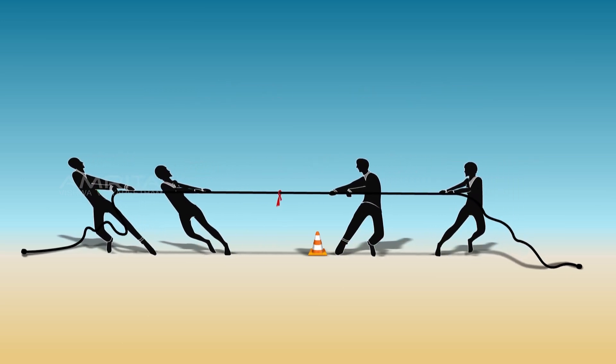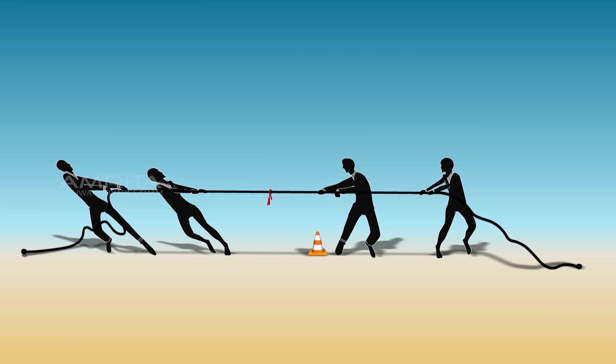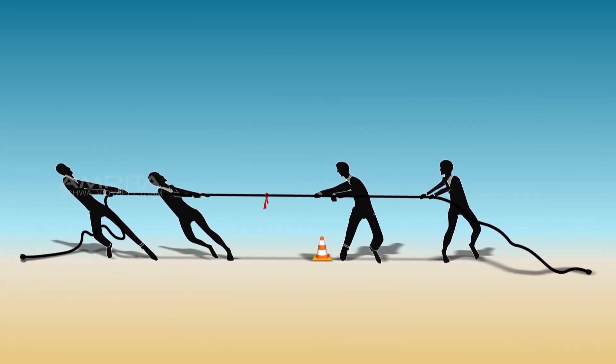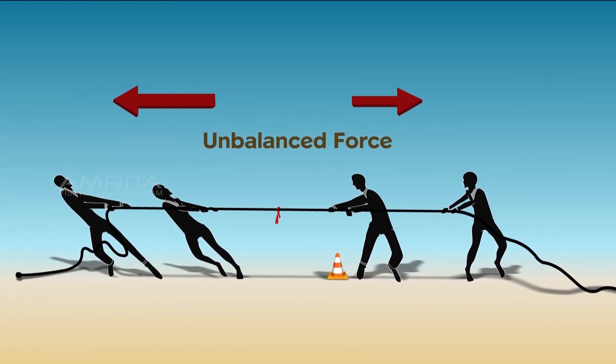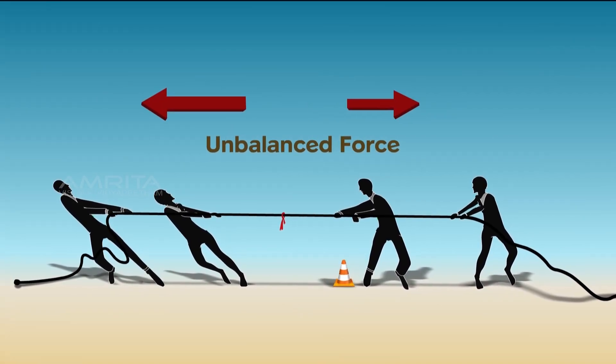If one of the teams applies greater force, it pulls the other team and the rope towards their side. In this case, the forces are unbalanced, as the two forces are of unequal magnitudes in opposite directions.